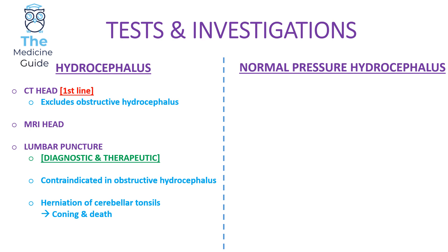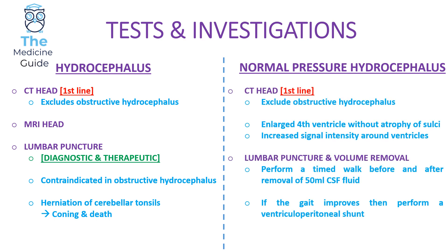For normal pressure hydrocephalus, again perform a CT head first line to exclude obstructive hydrocephalus. The CT head may show enlarged ventricles with relative atrophy of the sulci and increased signal intensity around the ventricles. Once obstruction is excluded, perform a lumbar puncture and remove 50 millilitres of CSF. If the patient's gait improves following this removal, it confirms likely normal pressure hydrocephalus, and we can proceed to the definitive management: a ventricular peritoneal shunt.